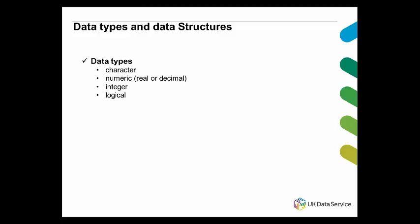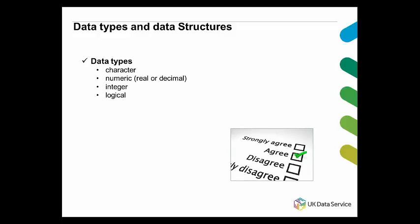In terms of data types, we have character, which are just nominal variables like female and male — this is what Stata calls string variables. We have numeric, which are real or decimal numbers. We have integer — an integer is a whole number, for instance 5 is an integer but 5.1 is a decimal so it's not an integer. And we have logical, which only takes the value of true or false.